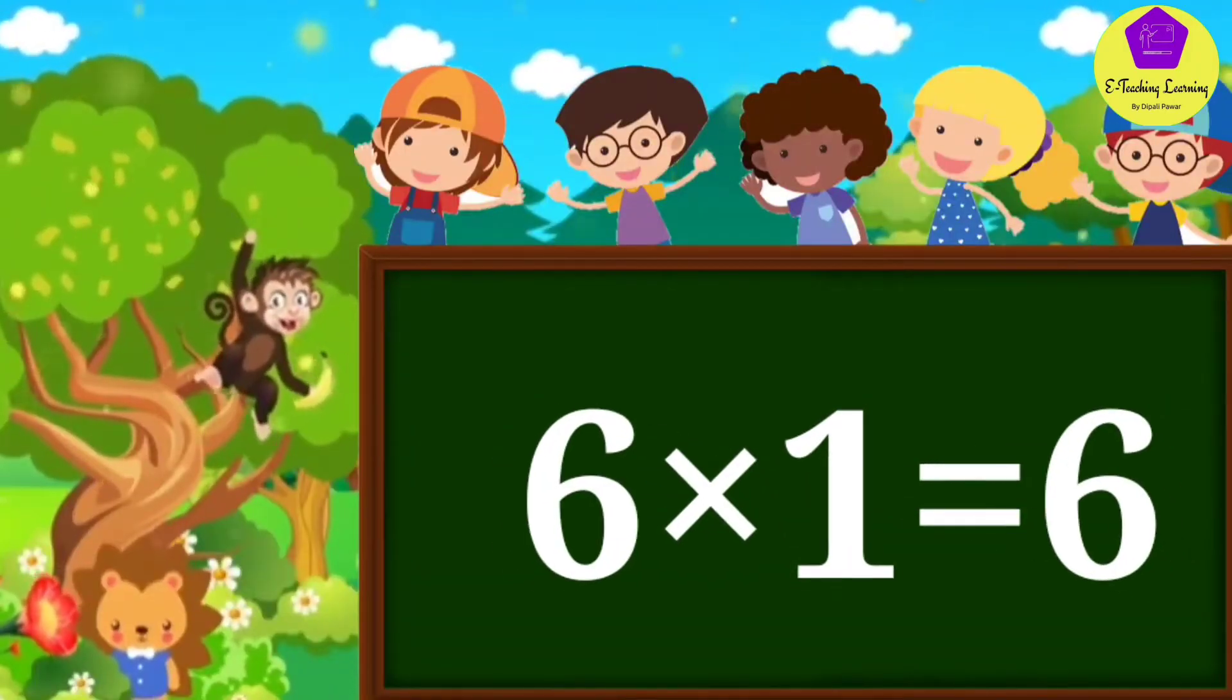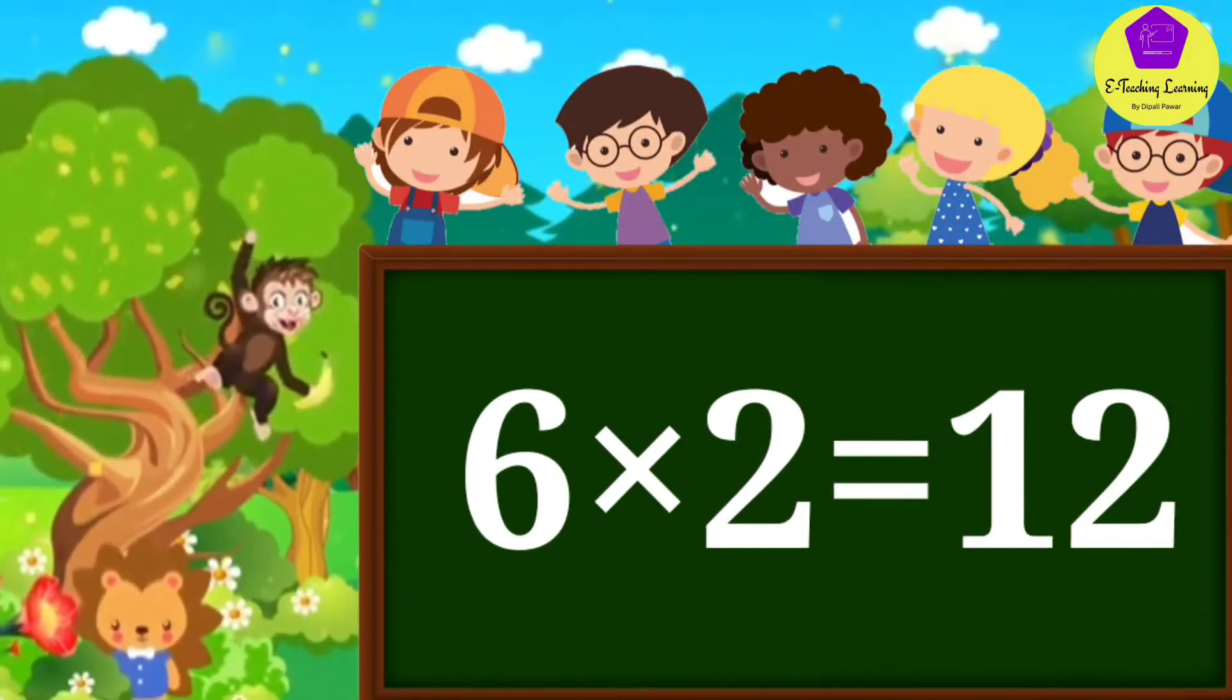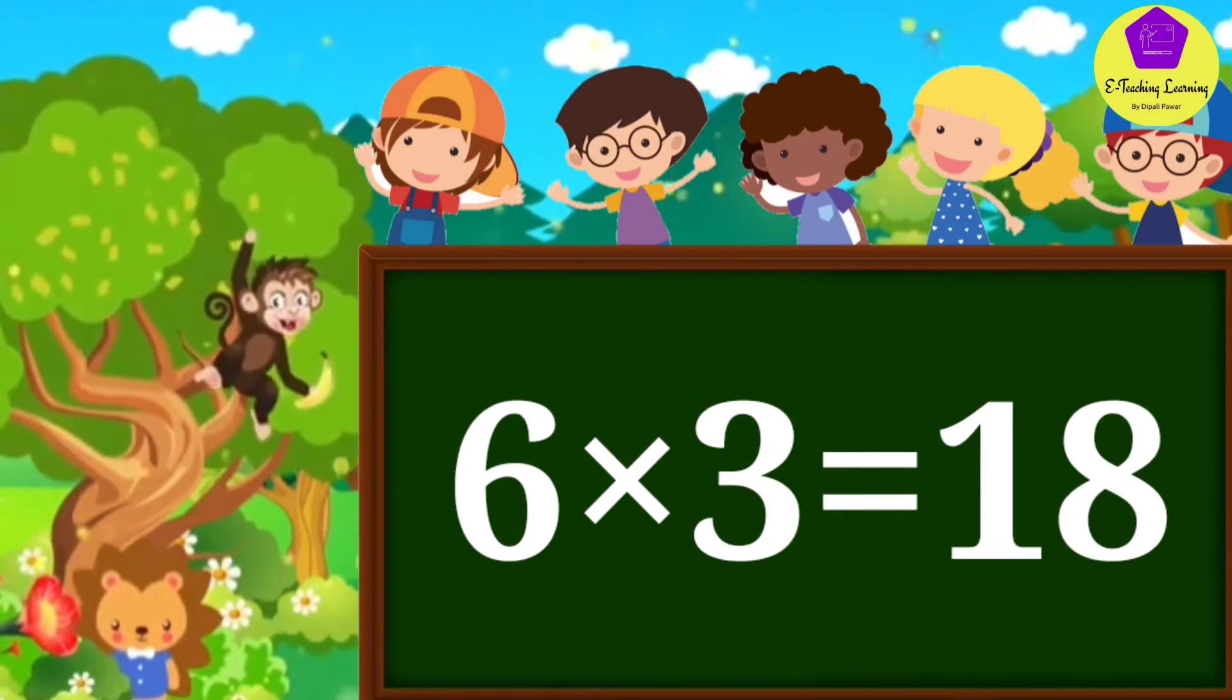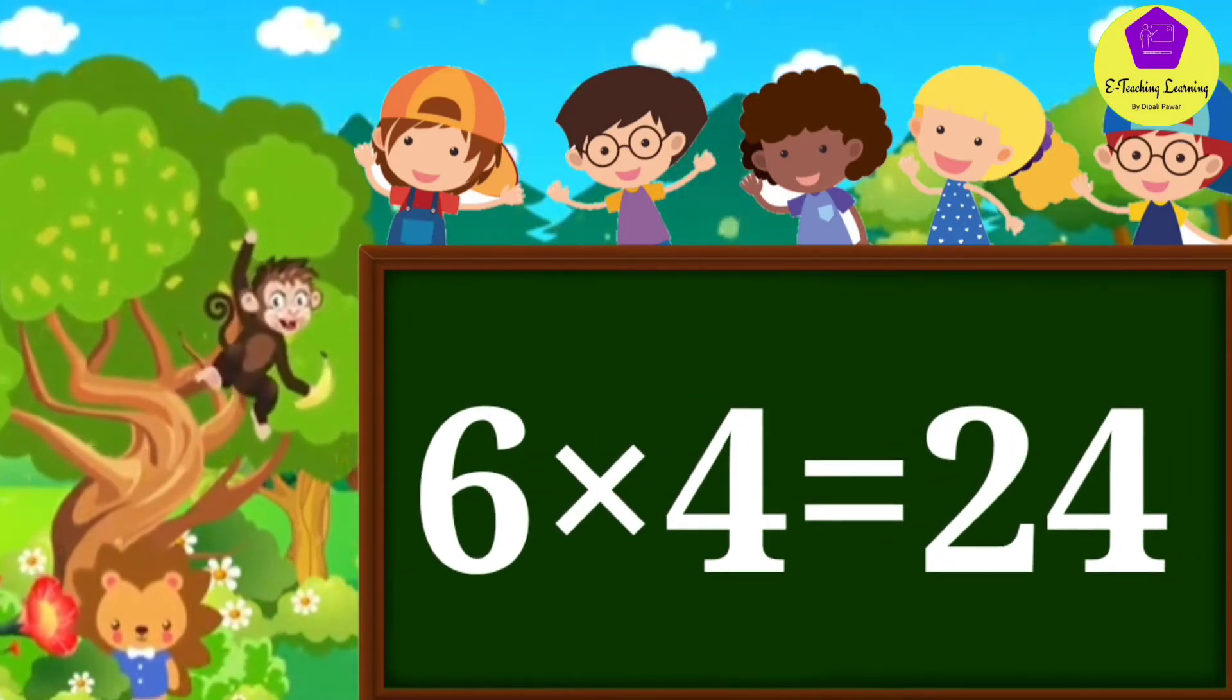Six ones are six, six twos are twelve, six threes are eighteen, six fours are twenty-four.